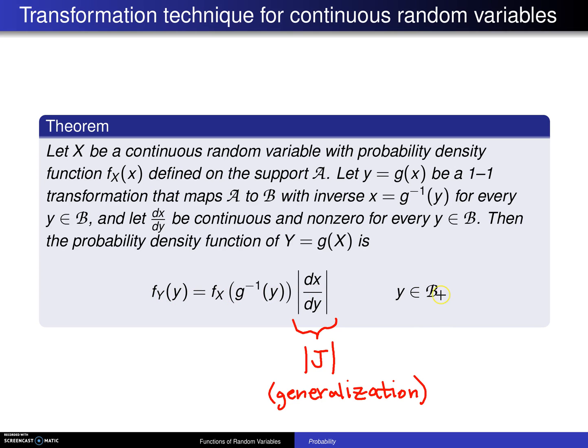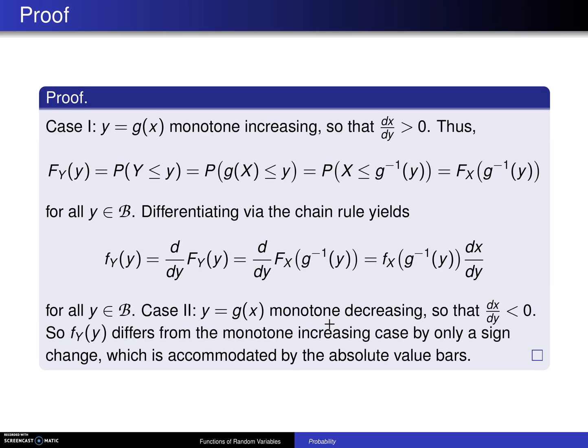This formula looks exactly like the discrete case, except for this additional term out here, and in the proof you'll see why that term appears. So here is the proof. Now there is a case 1 and there is a case 2.